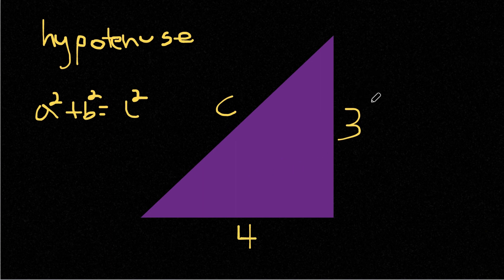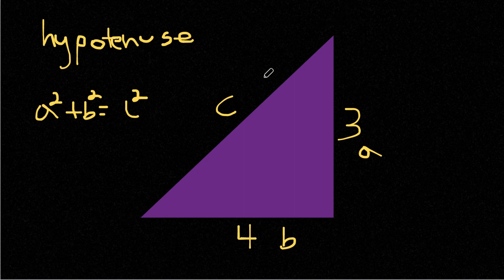A is any of these sides and so is B. So this side is A, and this side is B. A and B don't matter, they're one of these two sides. However, C is always going to be our hypotenuse.